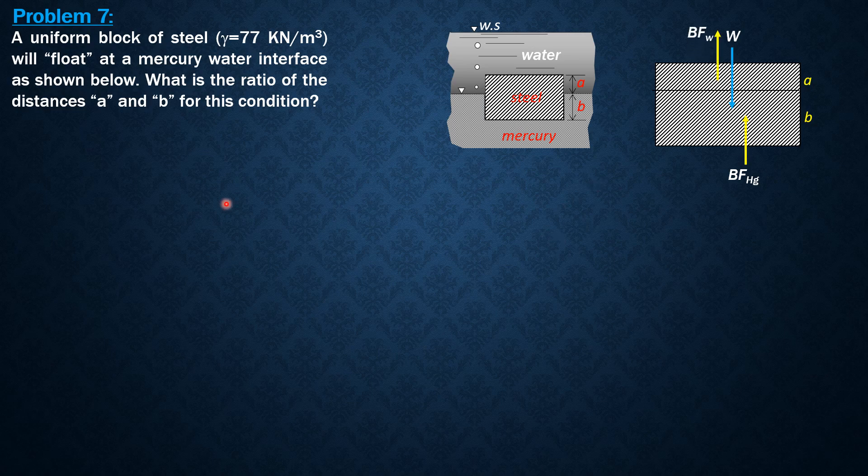Buoyant force in mercury is the specific weight of mercury, which is specific gravity 13.6 times gamma of water, times the volume that is submerged in mercury. The volume is area of the bottom, which we will call capital A, times b.